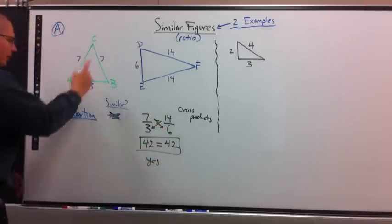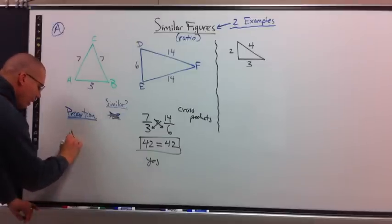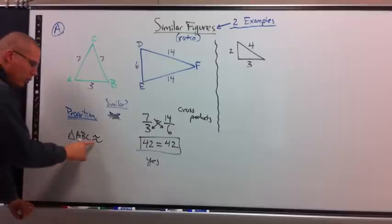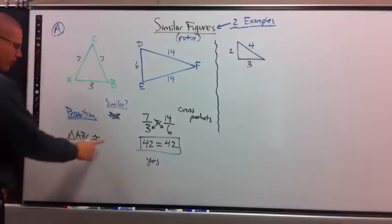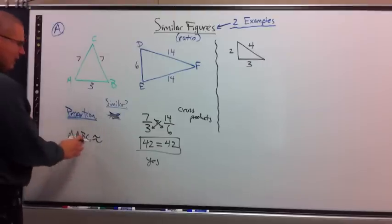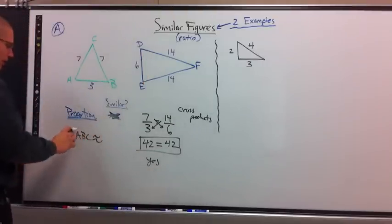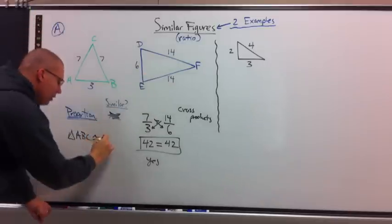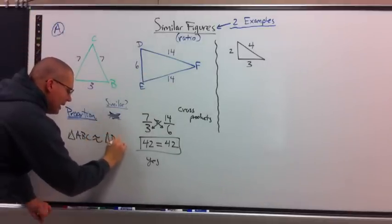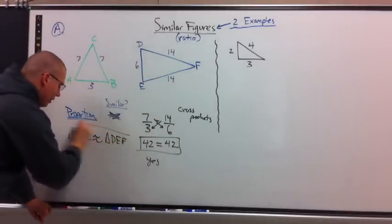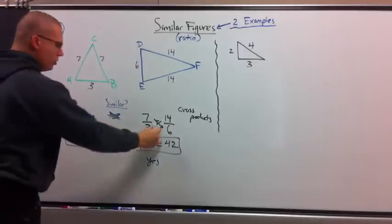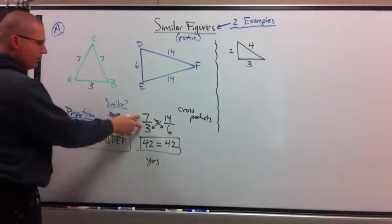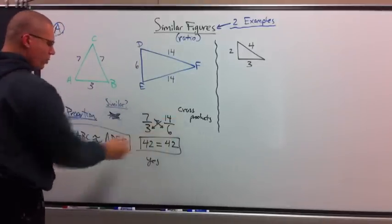So to finish out the problem, you could say, triangle A, B, C is similar. Similar is a wavy equal sign with no line underneath. A, B, C is similar to, now I've got to match up my letters, A, B, C, D, E, F. To triangle D, E, F would be your final response. What work did you use? You used this. Why? Because the question says, use proportions. This is a proportion, and yes, I proved it.